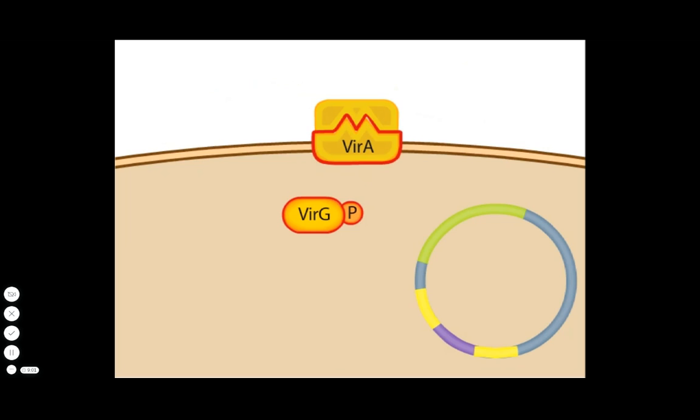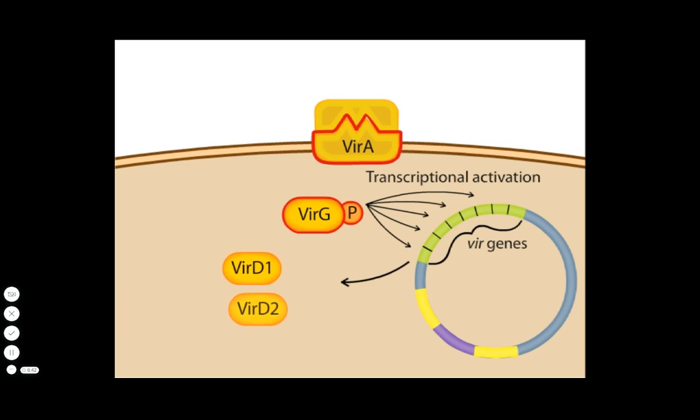A number of genes called VIR genes are located on the Ti plasmid. While the genes encoding VIR-A and VIR-G are turned on all the time, the expression of the other VIR genes requires activated VIR-G as a transcriptional activator. Two of the gene products are VIR-D1 and VIR-D2.